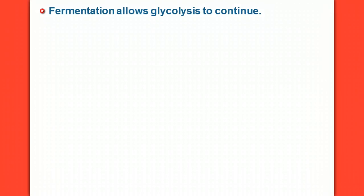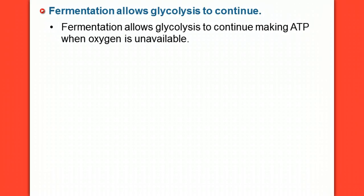That's really important for some of those single-celled, unicellular organisms that are quite small that don't necessarily need a lot of ATP like we do. So let's learn why fermentation allows glycolysis to continue. It helps glycolysis continue by making ATP when oxygen is not available.